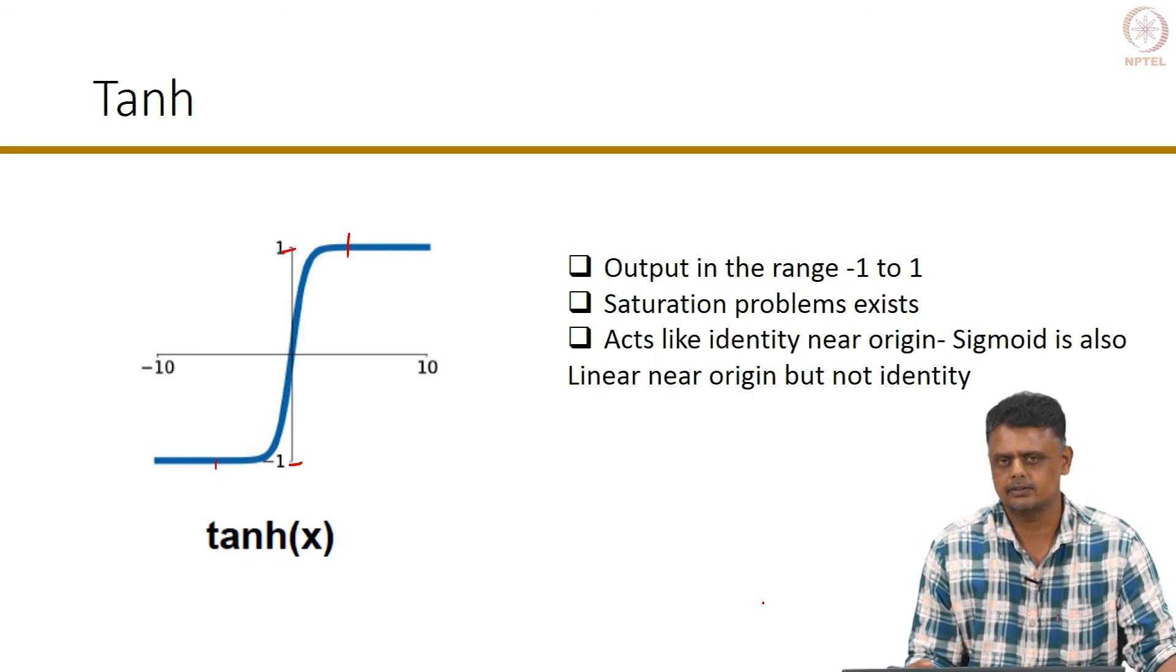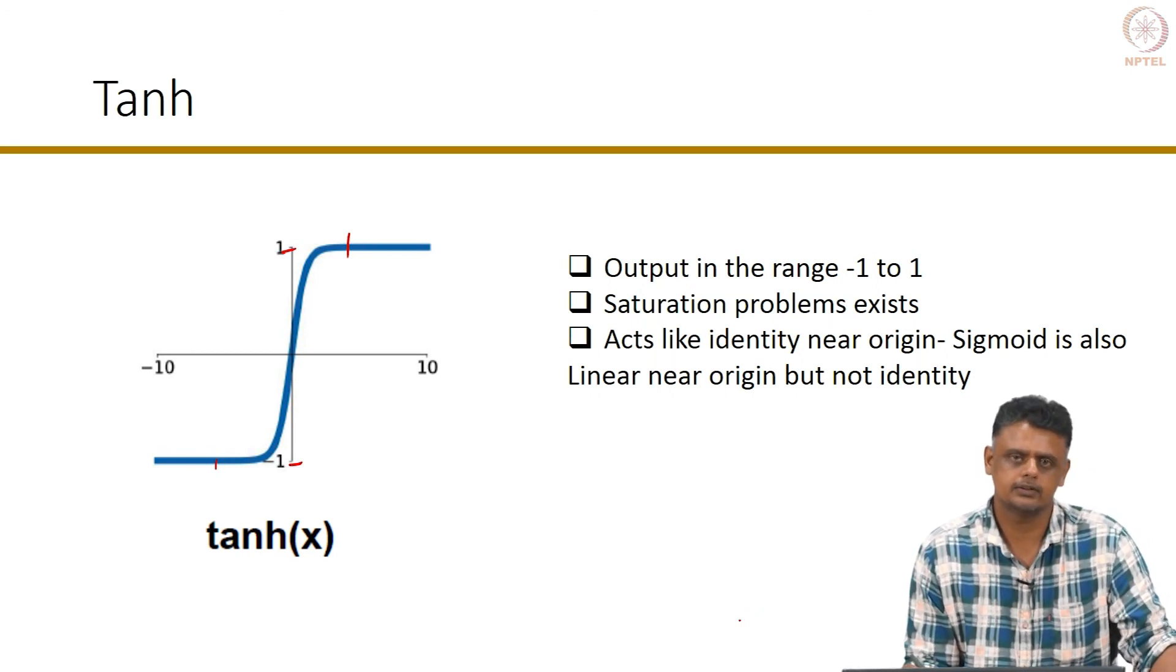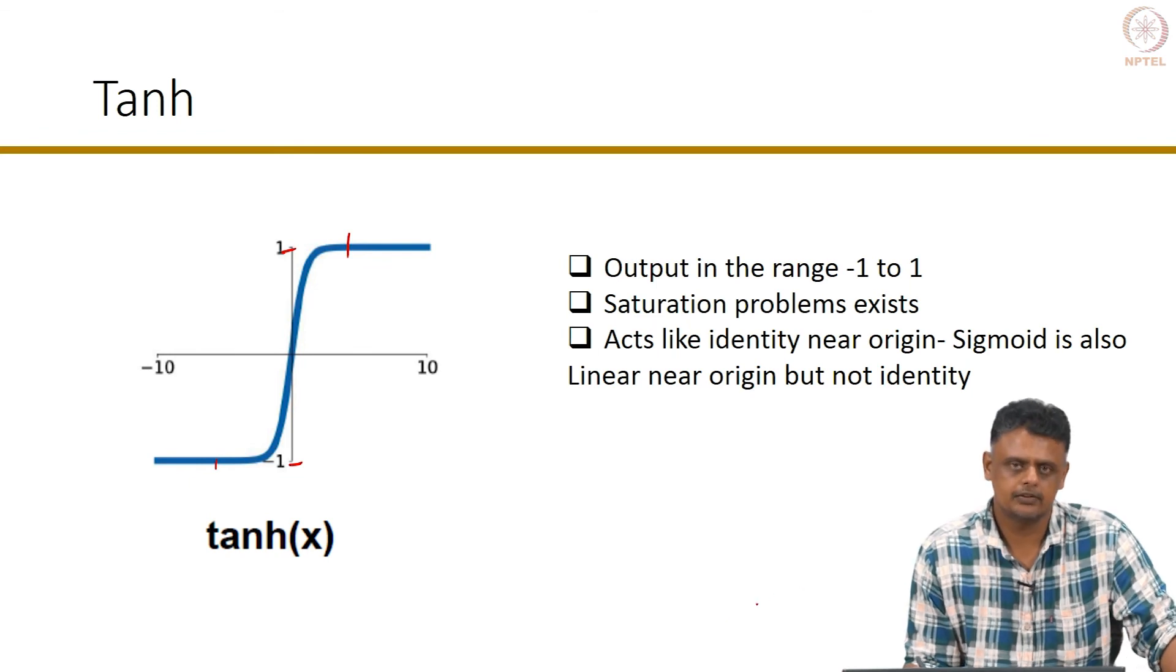Sigmoid, tan hyperbolic, and ReLU are the most often used and the most effective activation functions that are used in artificial neural networks and all flavors of convolutional neural networks.